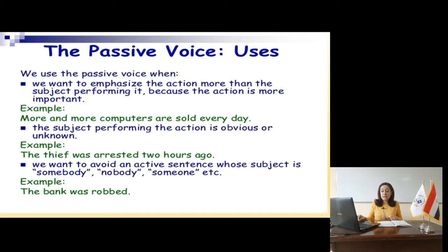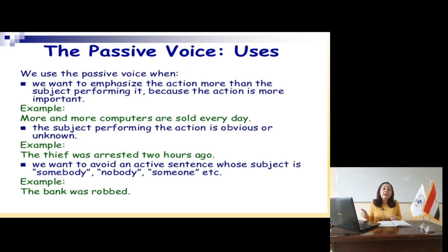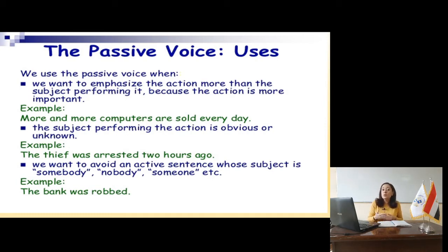Another reason: when I say 'the thief was arrested two hours ago,' I don't have to mention who arrested the thief, because you know very well it could be the police. We also want to avoid active sentences whose subject is somebody, nobody, or someone. When I say 'the bank was robbed,' adding 'someone robbed the bank' wouldn't add any useful information, so it's not necessary.